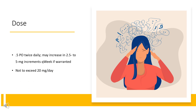Dose. Attention Deficit Hyperactivity Disorder. Focalin: Initial dose is 2.5 mg PO twice daily, may increase in 2.5 to 5 mg increments per week if warranted. Not to exceed 20 mg per day.